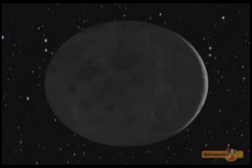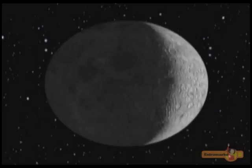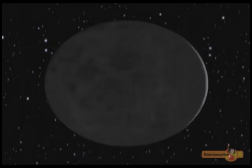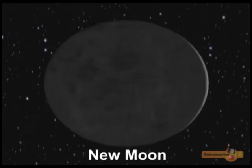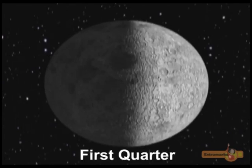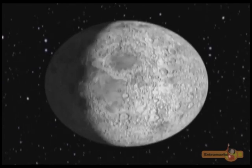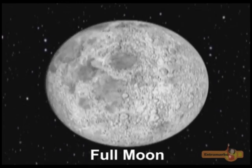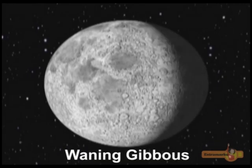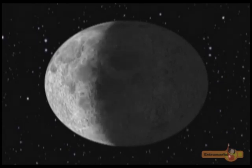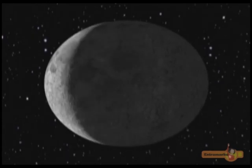The moon's phases repeat every month, starting with new moon. The different phases of the moon are: New moon, Waxing crescent, First quarter, Waxing gibbous, Full moon, Waning gibbous, Last quarter, and Waning crescent.